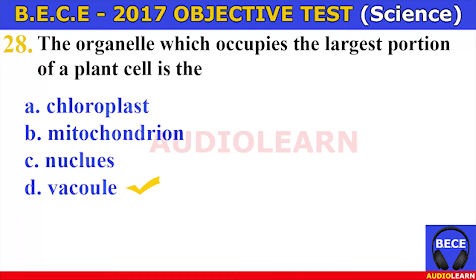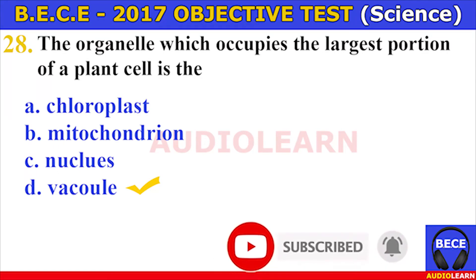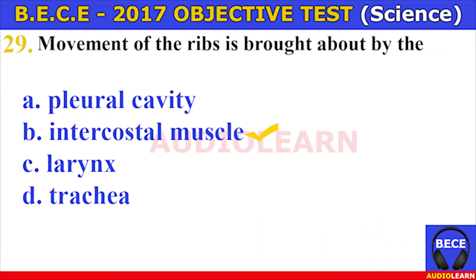The testes are normally located outside the body of the male because the temperature of the body is too high for effective sperm production. Number twenty-eight. The organelle which occupies the largest portion of a plant cell is the A. Chloroplast, B. Mitochondria, C. Nucleus, D. Vacuole. The answer is D. Vacuole. The organelle which occupies the largest portion of a plant cell is the vacuole.